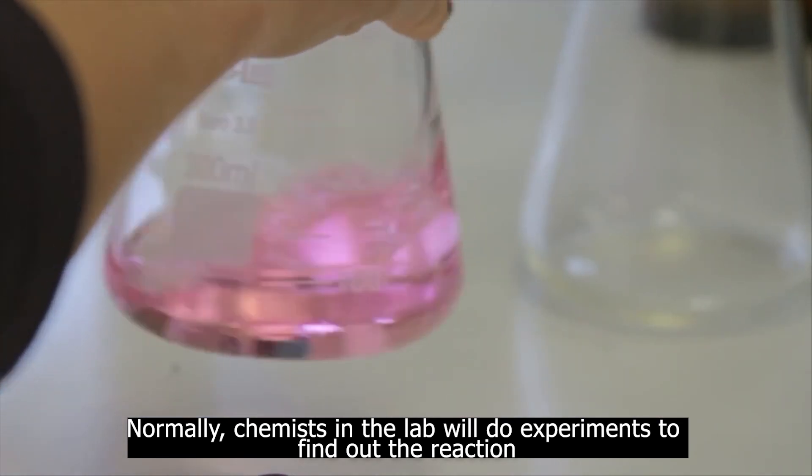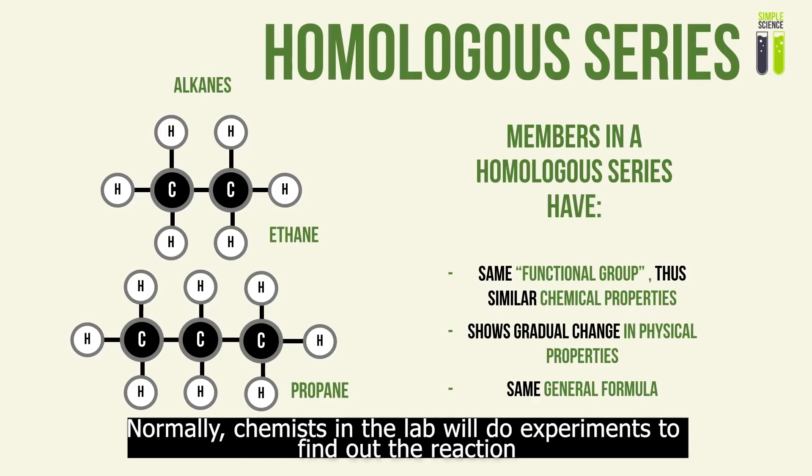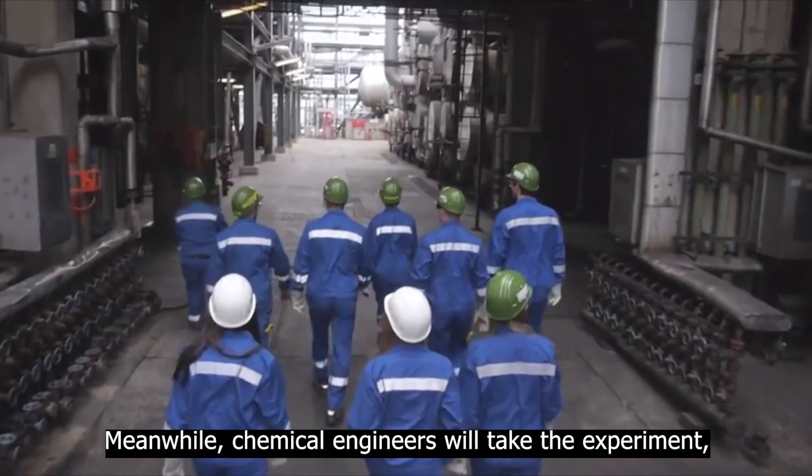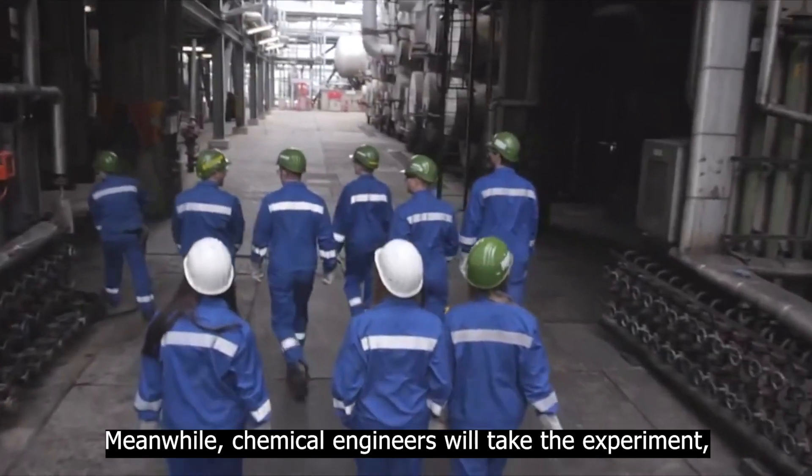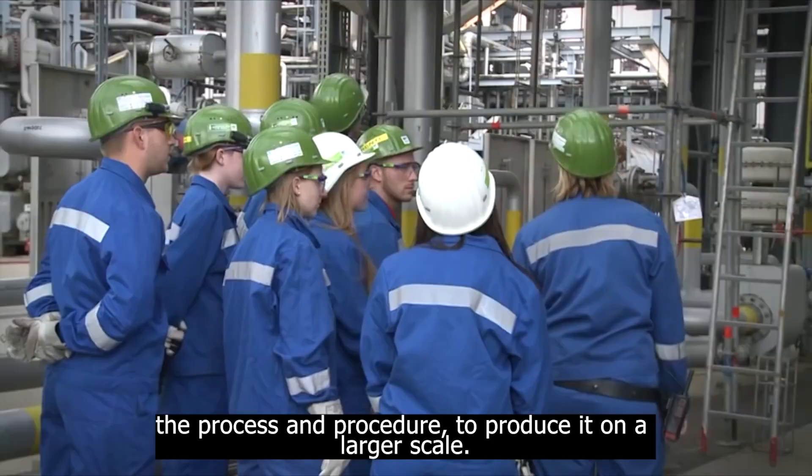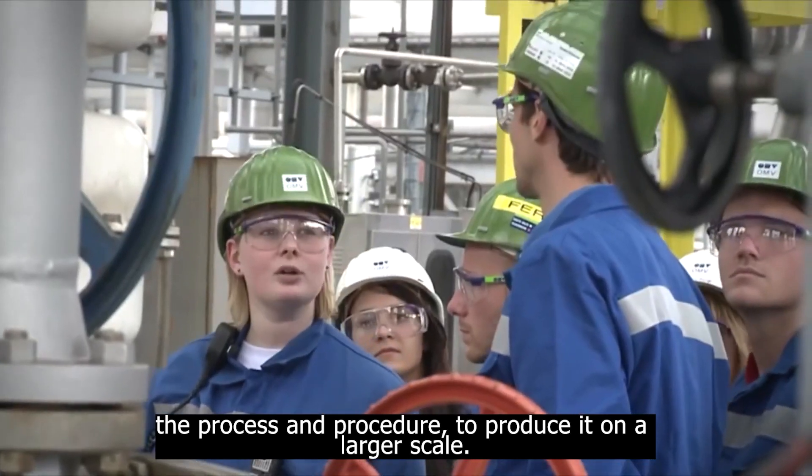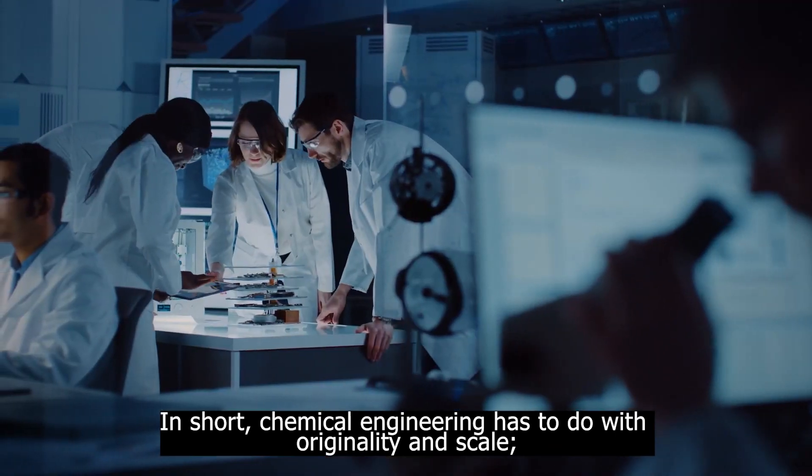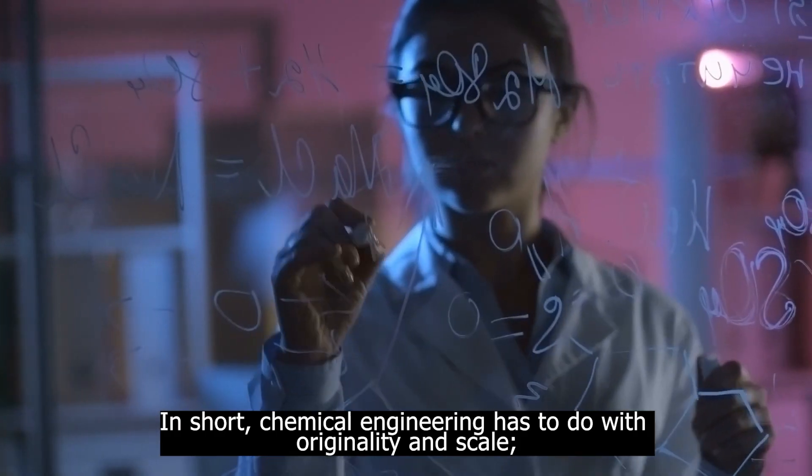Normally, chemists in the lab will do experiments to find out the reaction to produce the desired product. Meanwhile, chemical engineers will take the experiment, the process and the procedure to produce it on a larger scale. In short, chemical engineering has to do with originality and scale.